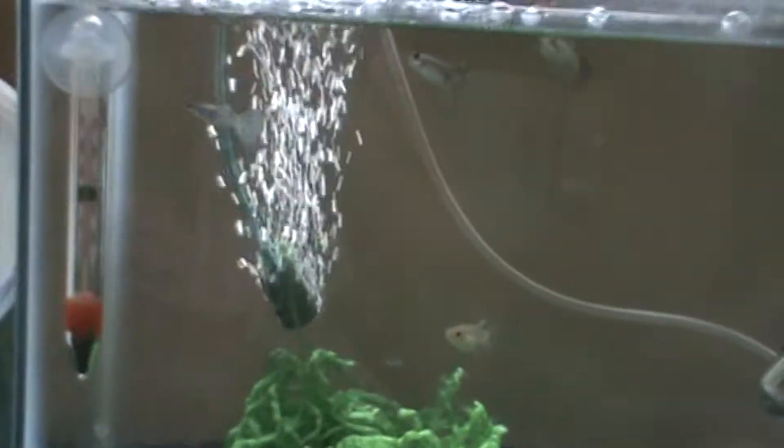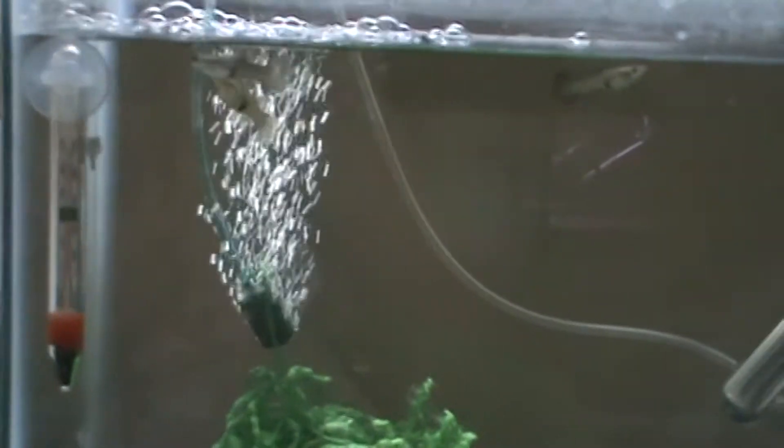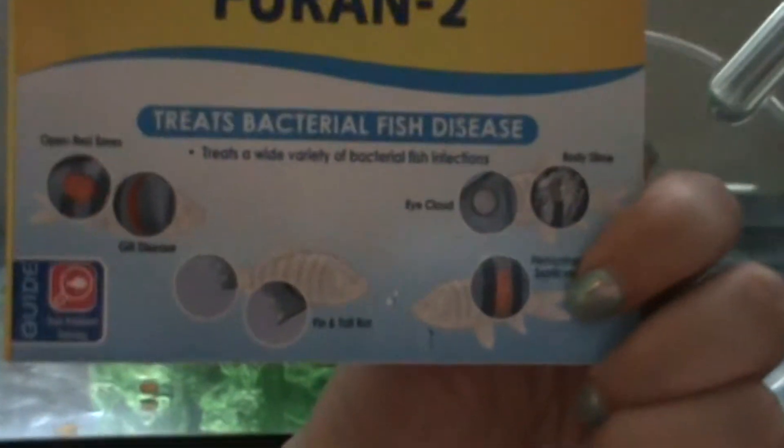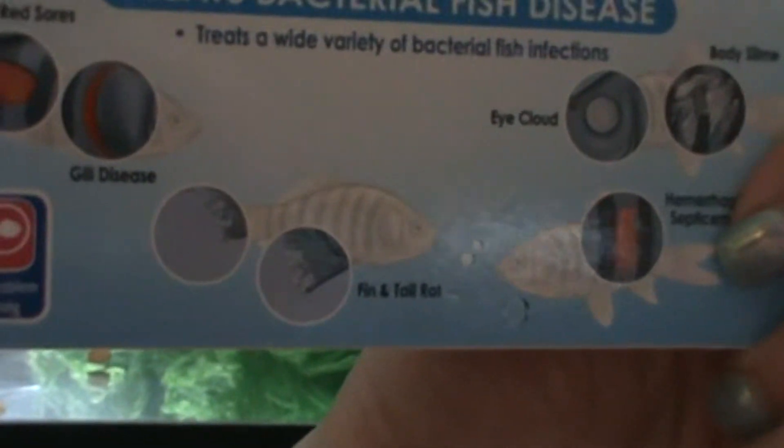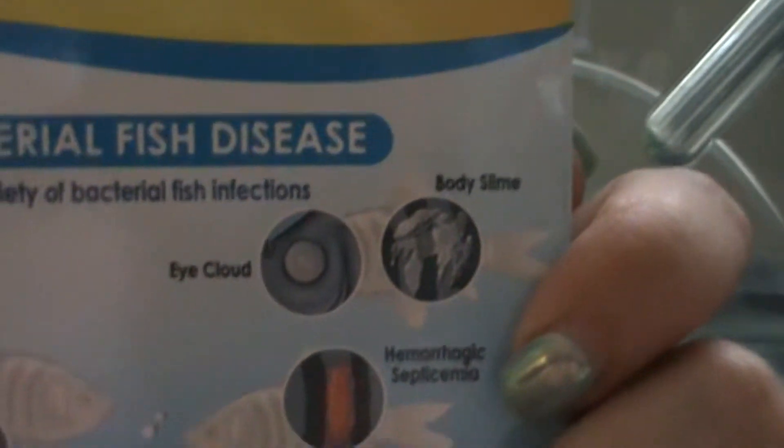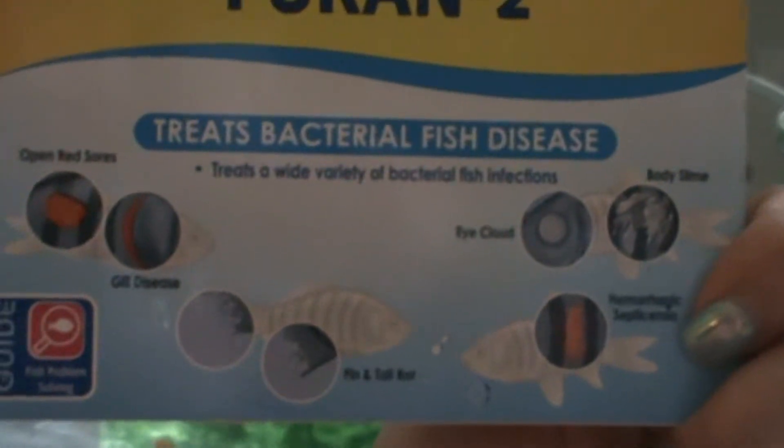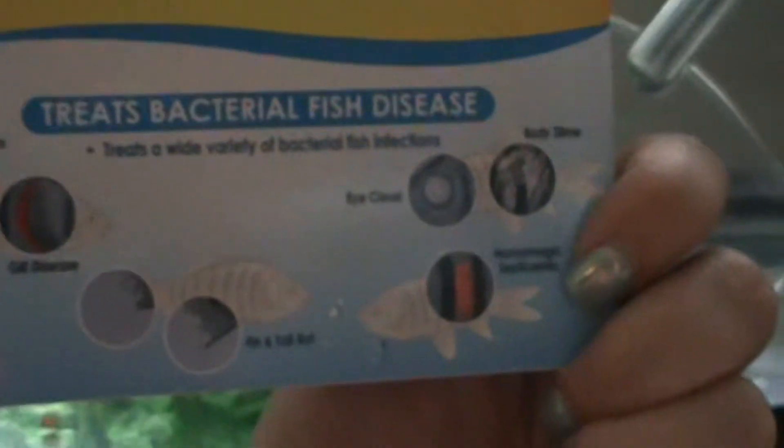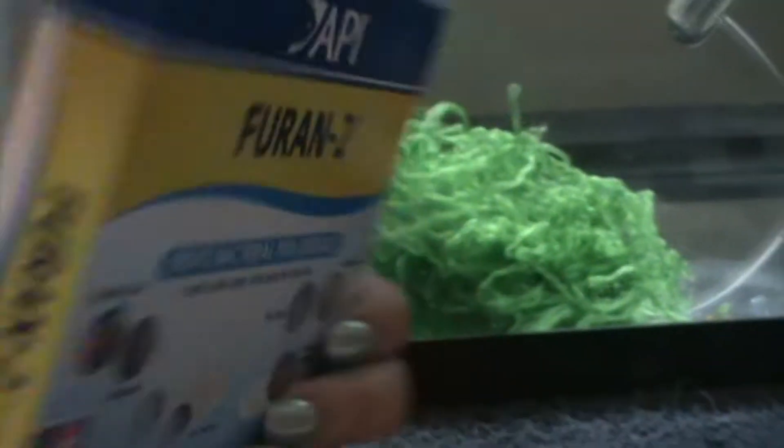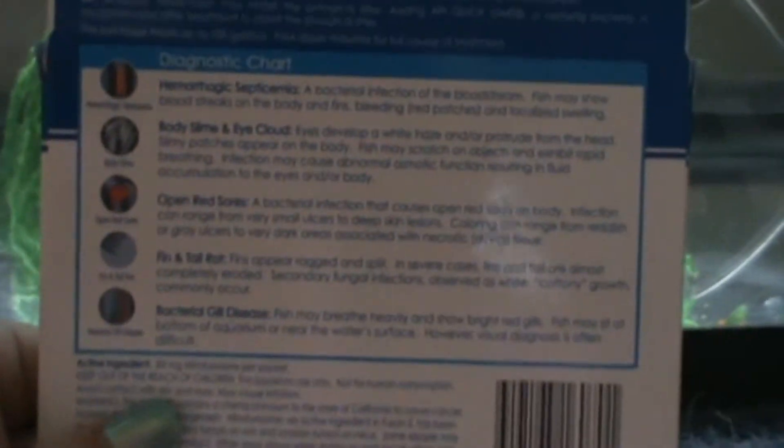Basically I had to get Furin-2. And of course it does say it treats bacterial fish disease. You can kind of see it does open red sores, fin and tail rot, body slime, eye cloud. All these are gram negative signs. So you certainly can get it here.